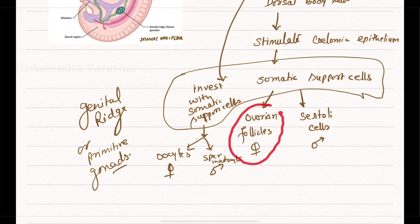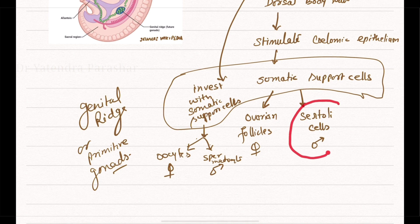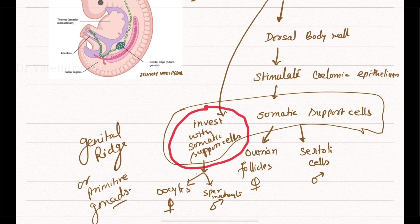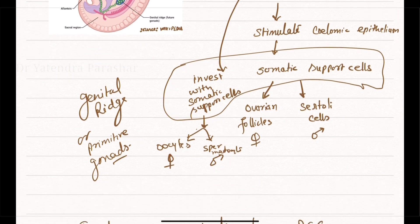These somatic support cells gradually differentiate into the ovarian follicles in case of females, and Sertoli cells and testicular cords in case of males. Meanwhile, the primordial germ cells themselves become invested with these somatic support cells to form oocytes in case of females and spermatocytes in case of males.